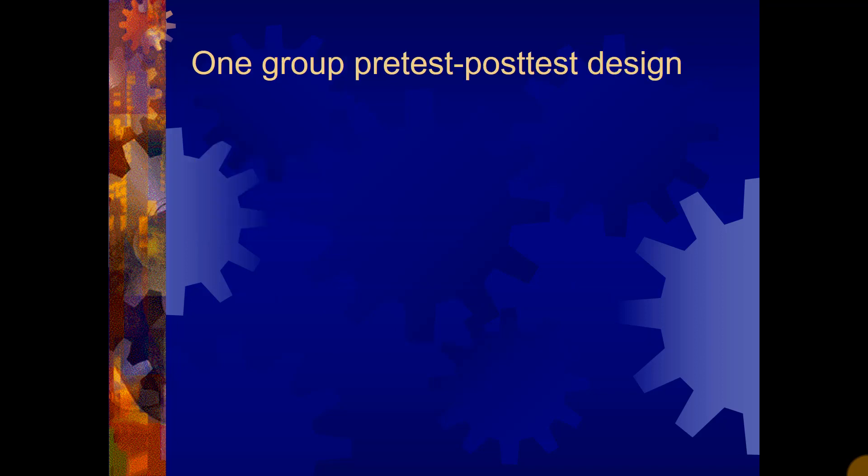The second one is called the one-group pretest post-test design, and just like the name suggests, it looks something like this. So again, remember time is moving forward this way, from left to right. So here we have the pretest, and the intervention, and then the post-test. So it's one group, pretest, post-test, design.